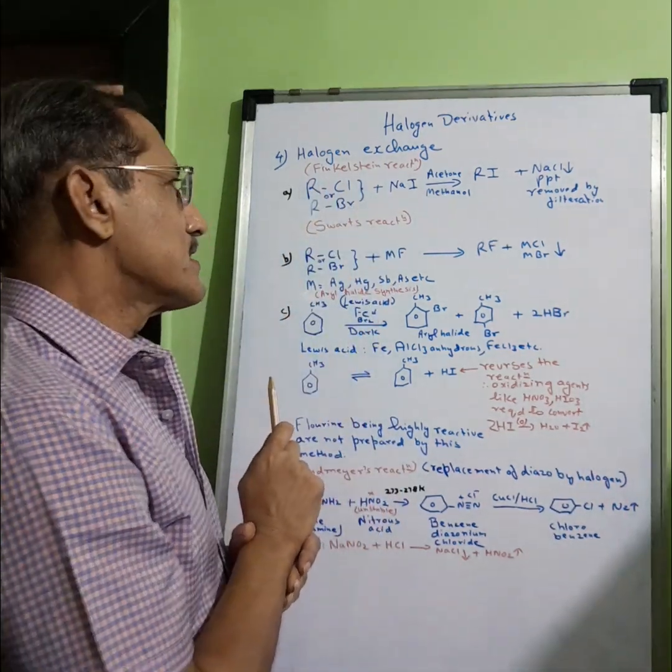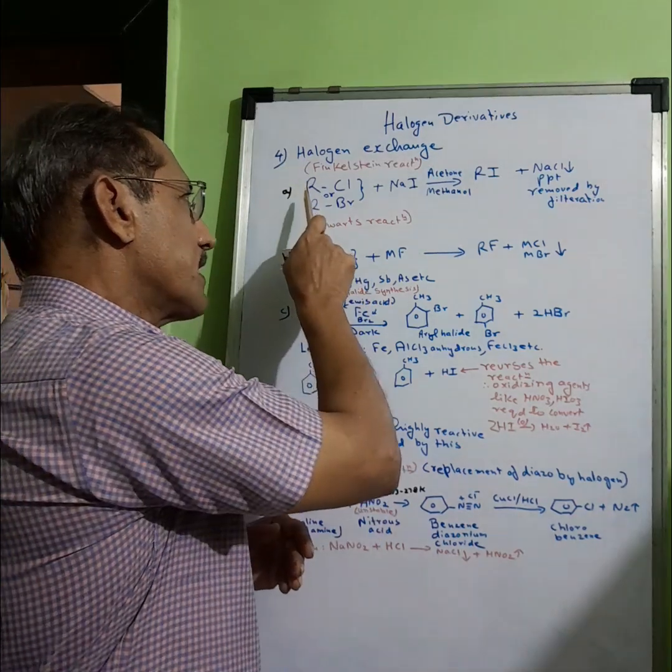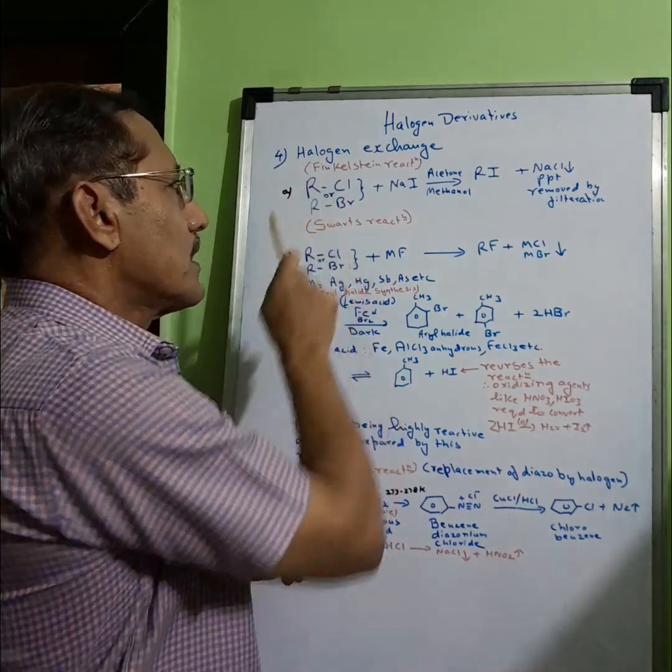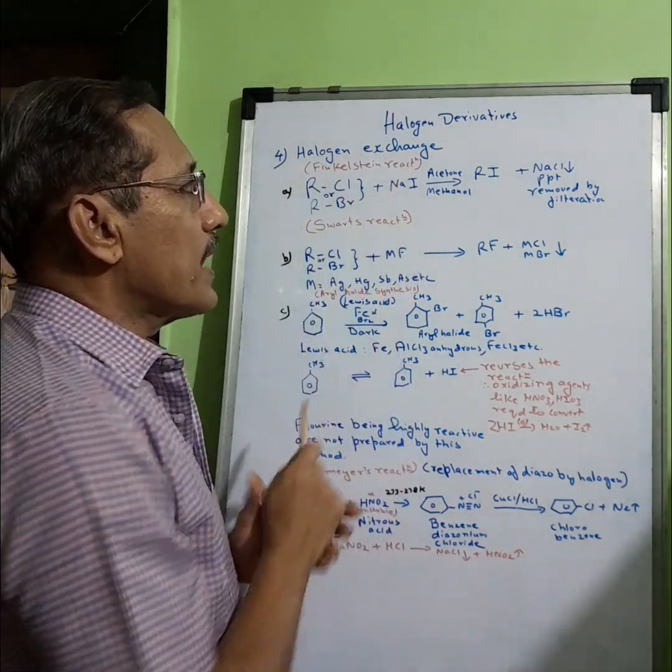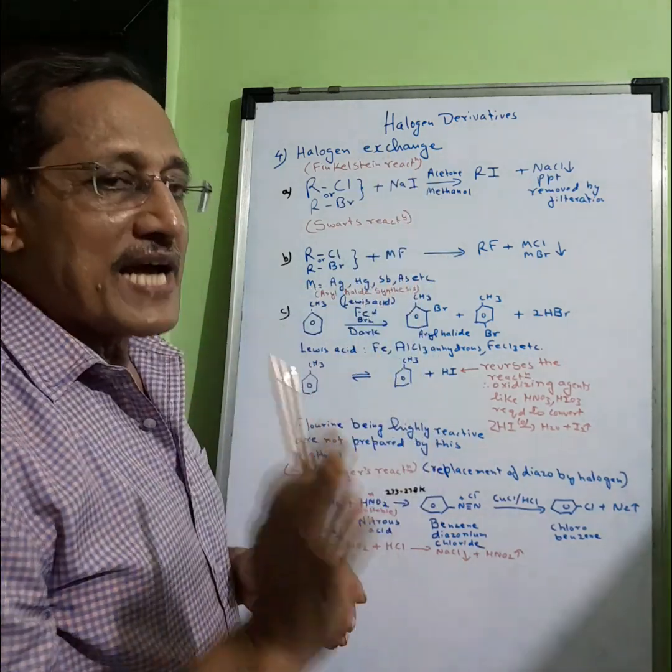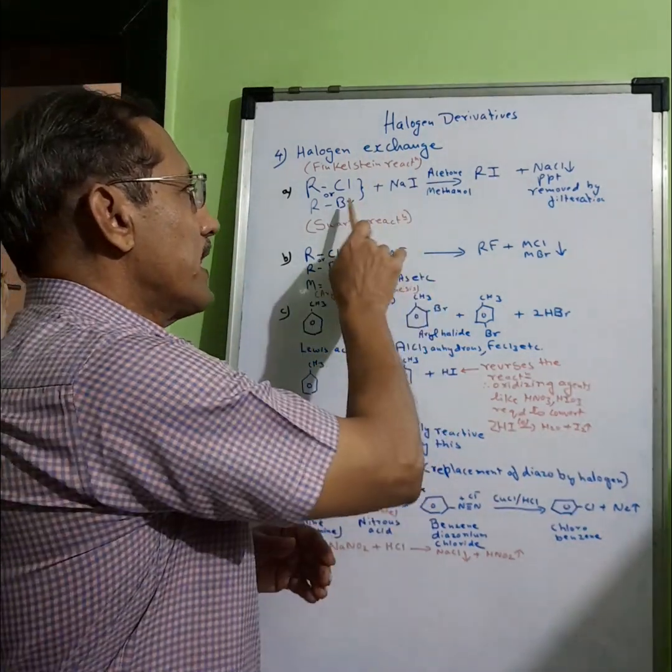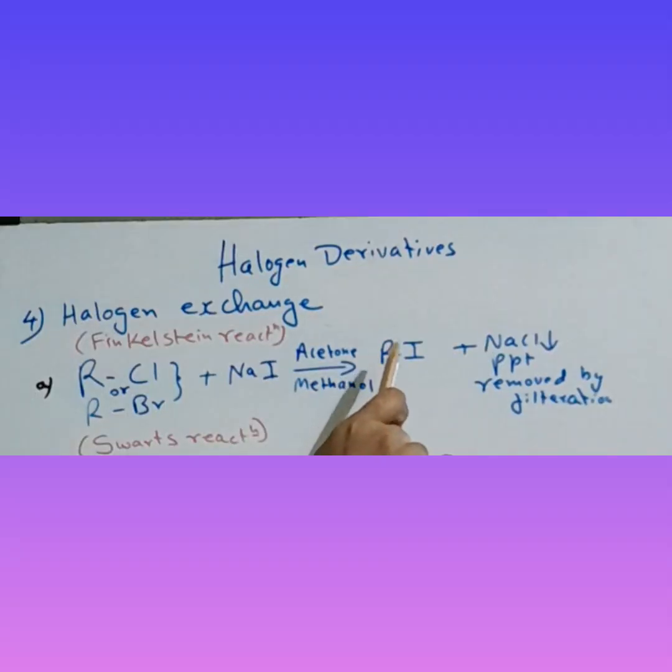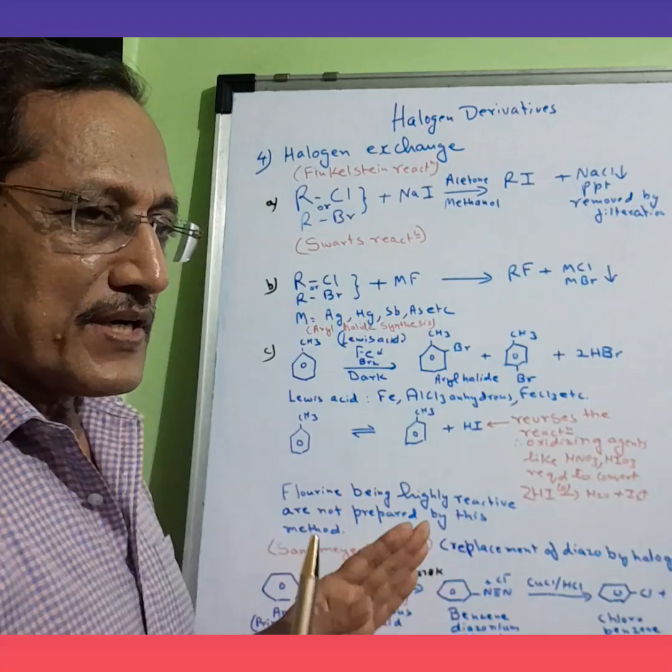In Finkelstein's reaction, we take alkyl chloride or alkyl bromide and treat it with sodium iodide in presence of acetone or methanol as solvent. We end up with alkyl iodide. Sodium chloride or bromide precipitates out and can be easily removed by filtration. This is the Finkelstein reaction.